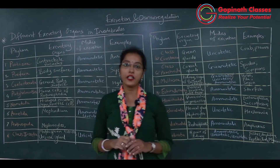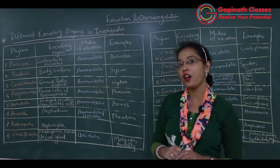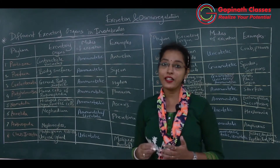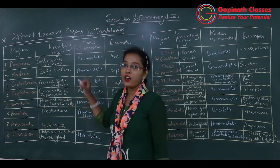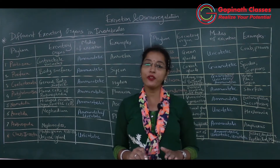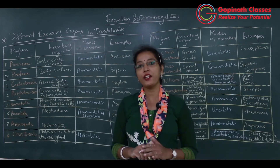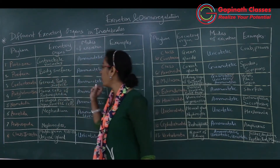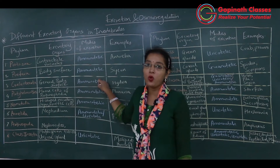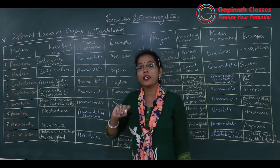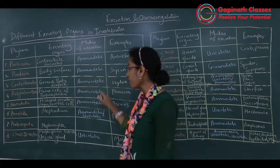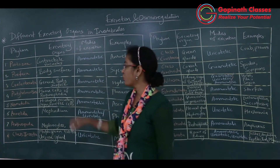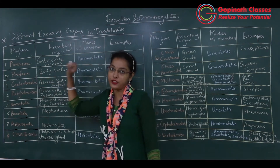The third phylum is Coelenterata, also known as Cnidaria — the phylum to which Hydra belongs. All coelenterates live in aquatic conditions, so ample water is available for removal of ammonia. They are ammonotelic; the mode of excretion is ammonotelism. Nitrogenous waste as ammonia is released through the general body surface, similar to Porifera.